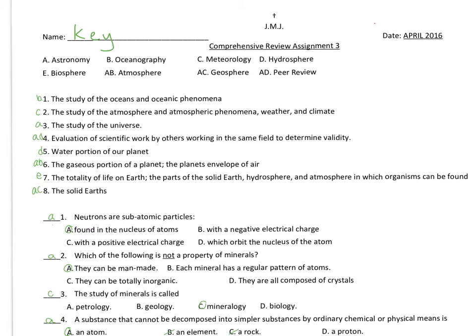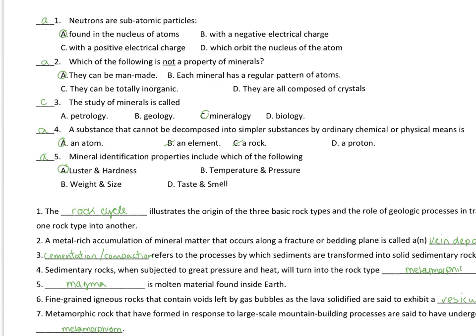The gaseous portion of our planet, or the gaseous envelope that surrounds our planet, that would be the atmosphere. The totality of life on Earth. Stop right there. Life on Earth, don't want to read anymore, biosphere. And then the solid Earth, of course, is the geosphere.